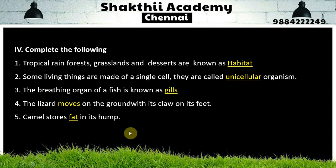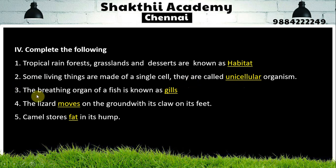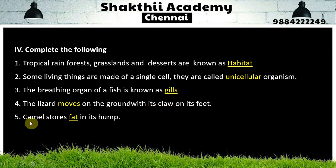Complete the following. Tropical rainforests, grasslands, and deserts are known as habitat. Some living things made of a single cell are called unicellular organisms. The breathing organ of a fish is known as gills. The lizard crawls on the ground with its claws on its feet. Camel stores fat in its hump.